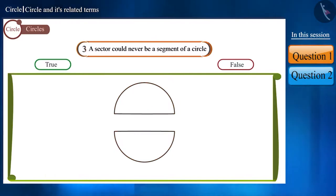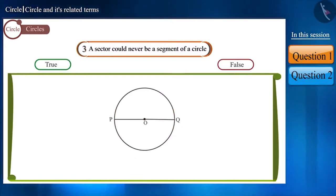Friends, in this case, we can call these two parts as both sector and circle segment. Because we call the area between the chord and the arc a circle segment, and line segment PQ is the diameter of this circle, that is, the largest chord.